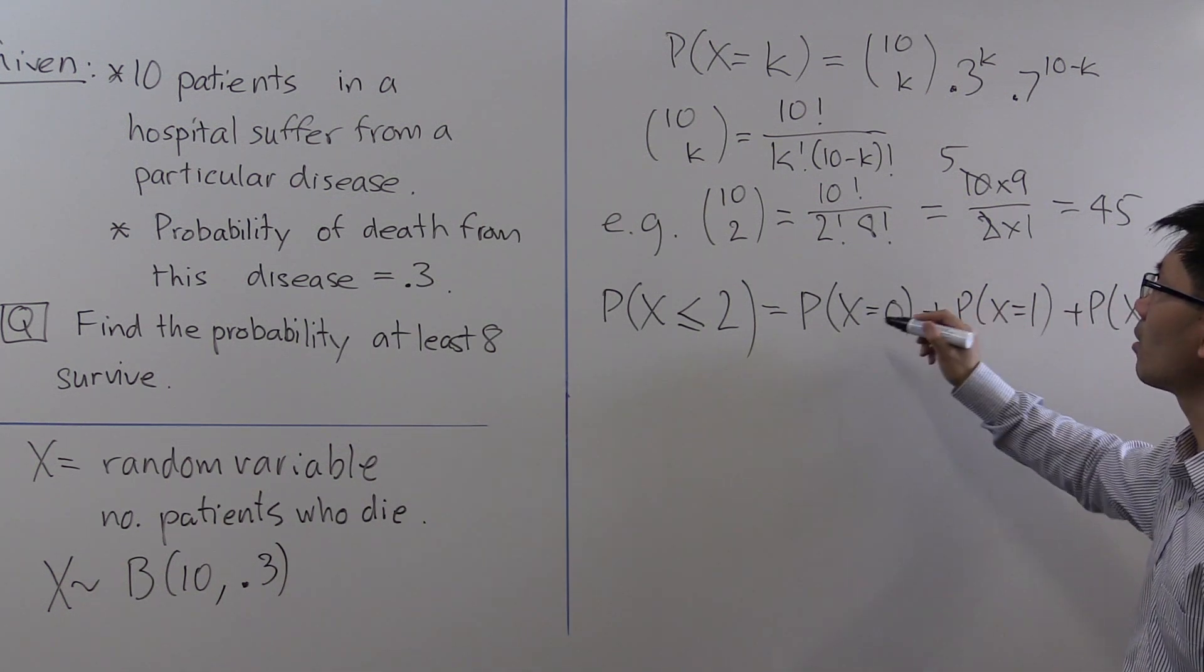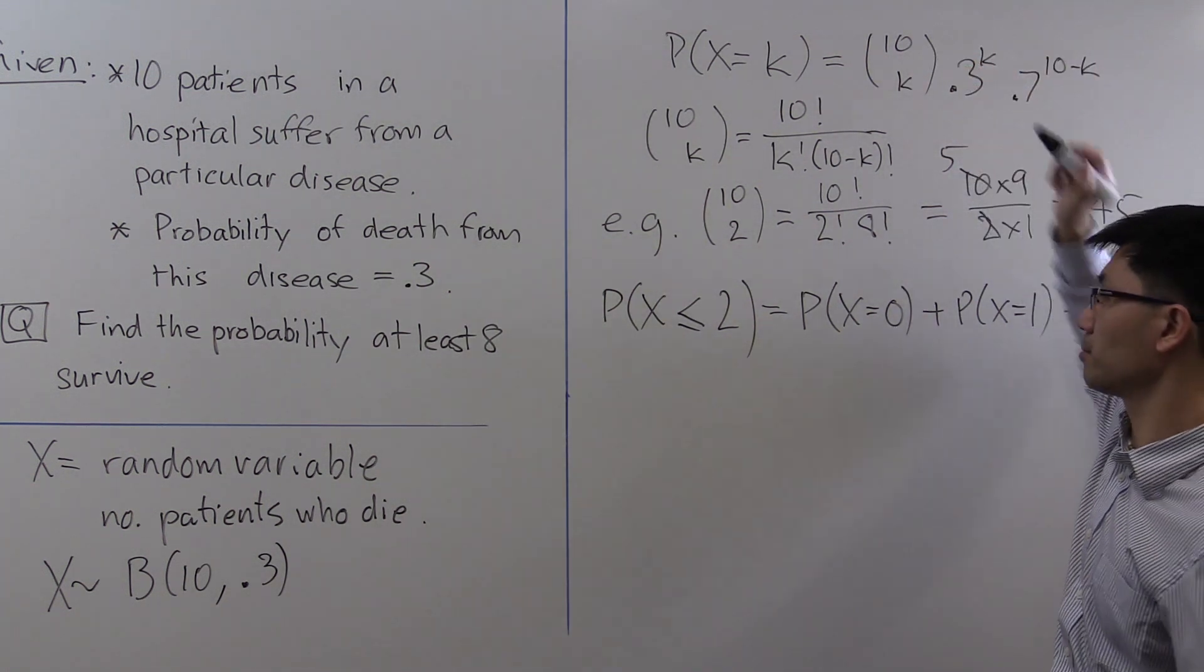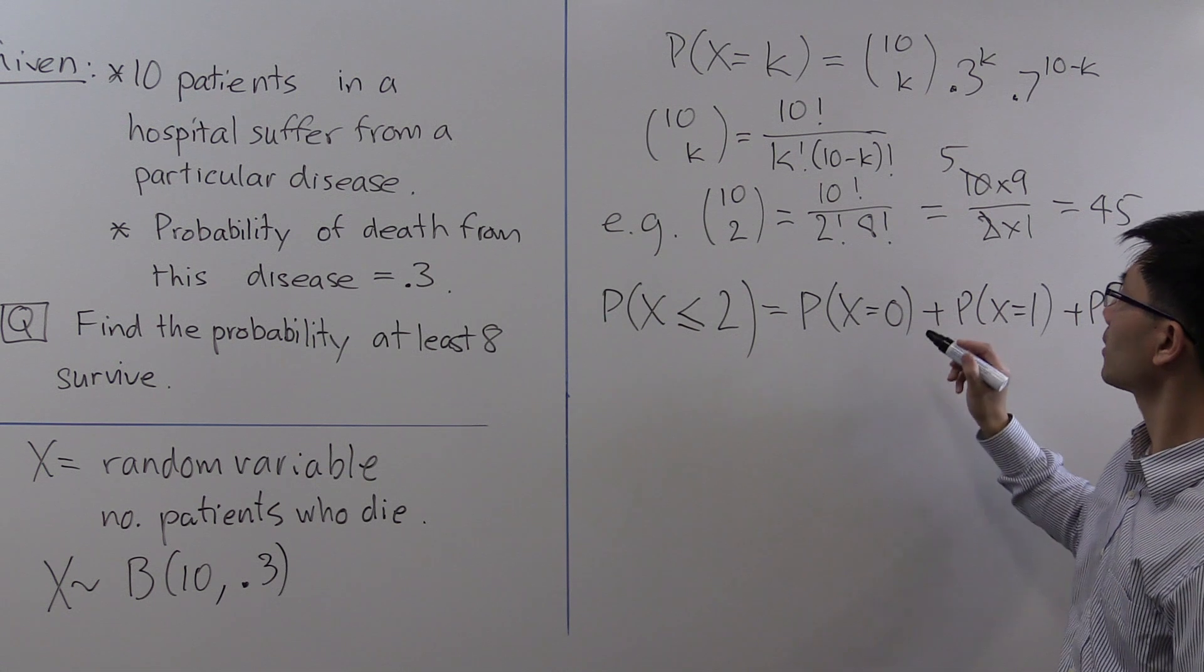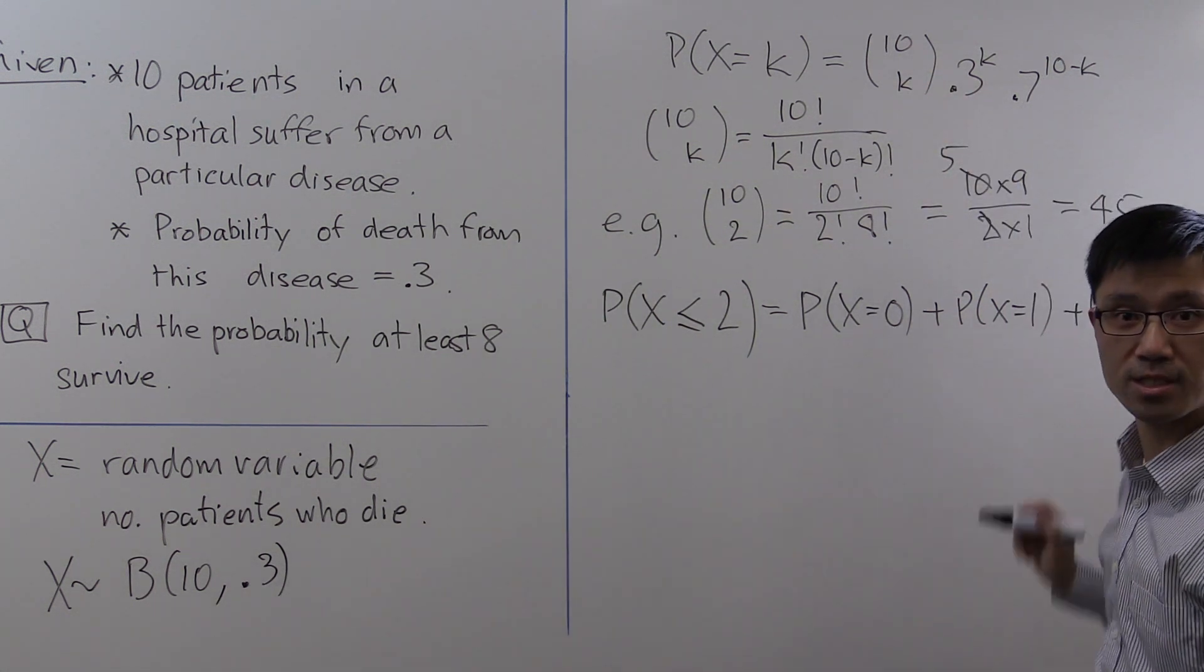And how do you work out each of these three? Well, we just use the binomial distribution formula. We're just putting k equals 0, 1, 2 into this formula, and that will give us our three summands.